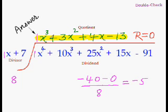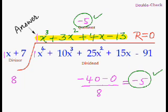1 plus 3 is 4. 4 plus 4 is 8. And 8 minus 13 is minus 5. That means our answer is absolutely correct.